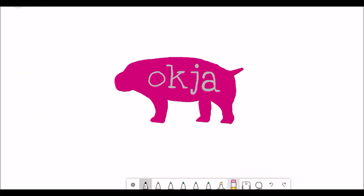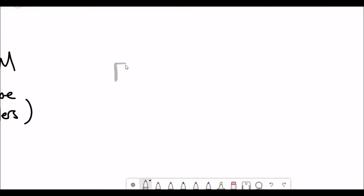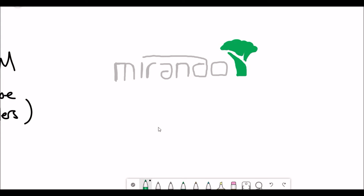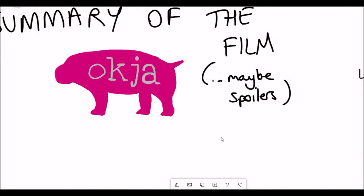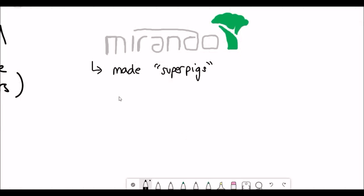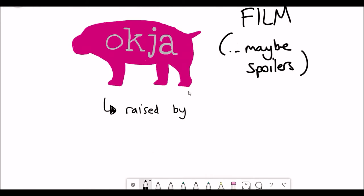Before I go any further with the science, I feel like I should give you a gist of the film, hopefully without too many spoilers. The film begins in 2007, where you get introduced to Lucy Miranda, the CEO of the Miranda Corporation. Lucy Miranda announces that they've been breeding a special kind of super pig. Their plan is they've got 26 of these super pigs, like Okja, and they want to give them to 26 different farmers across the globe, and then 10 years later they'll announce who has the best super pig.